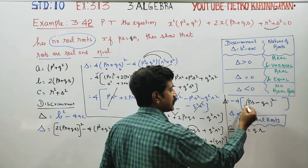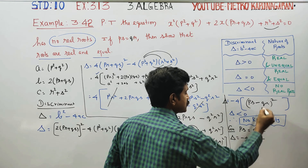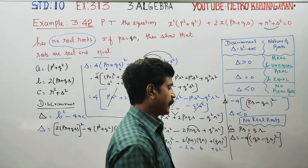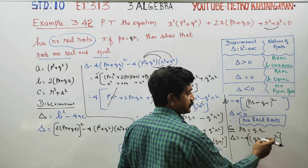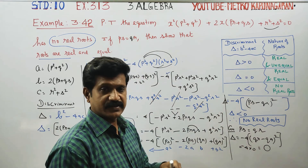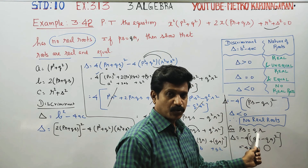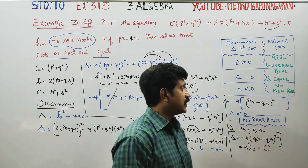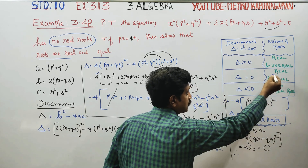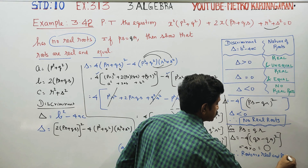Delta equals minus 4 times (ps minus qr)². Substituting PS equals QR: ps minus qr equals zero, so delta equals minus 4 times (0)² equals zero. Since delta equals zero, the roots are real and equal. Therefore, when PS equals QR, the roots are real and equal. Thank you.